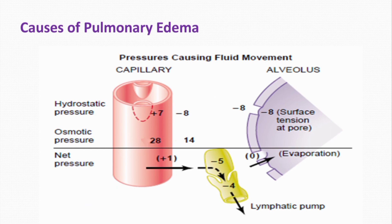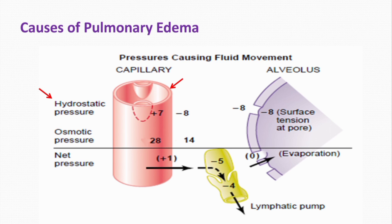The causes of pulmonary edema include: first, increased pulmonary capillary hydrostatic pressure — normally 7 mmHg — which may be seen due to left ventricular failure or mitral valve disease. Second, damage to the pulmonary capillary walls, which may be caused by inhalation of toxic gases such as chlorine, or due to infections such as pneumonia.